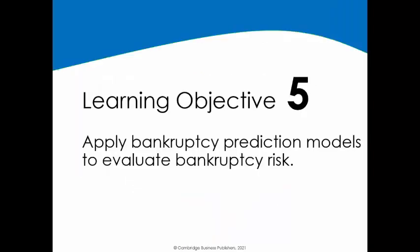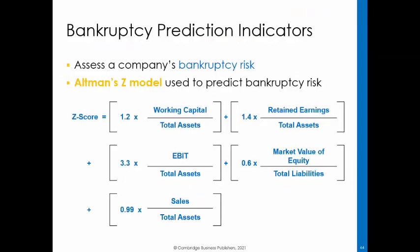In this learning objective, we will apply bankruptcy prediction models to evaluate bankruptcy risk. Bankruptcy is a worst-case scenario for creditors. Accordingly, creditors are very interested in assessing the likelihood that a company will go bankrupt. One model for assessing a company's bankruptcy risk is the Altman Z model, which assigns an Altman Z score based on the calculations shown on this slide. Each variable is related to financial strength. The first variable provides a measure of liquidity, while the second and third measure long-term and short-term profitability.